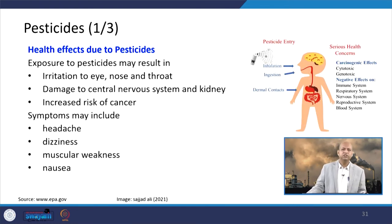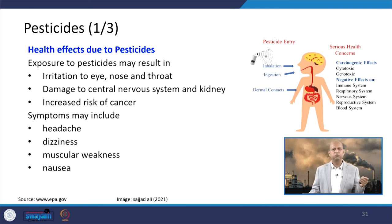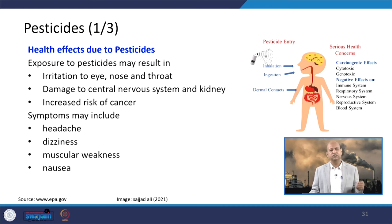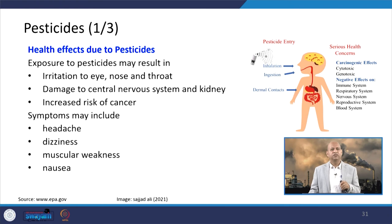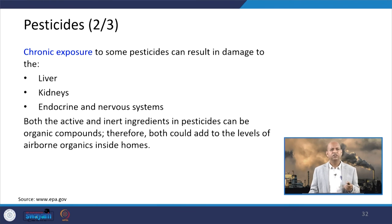Pesticides used for kitchen gardens or indoor plants can increase pesticide concentration in the indoor environment. They can cause irritation to eyes, nose, and throat, damage the central nervous system, affect the kidneys, and increase the risk of cancer. Symptoms may include headache, dizziness, muscular weakness, and nausea.